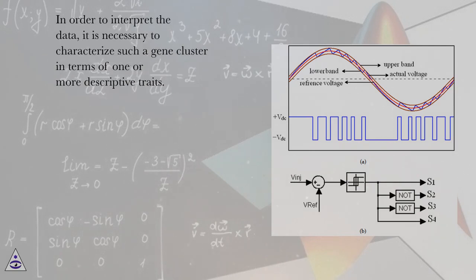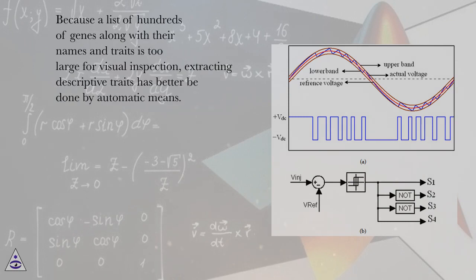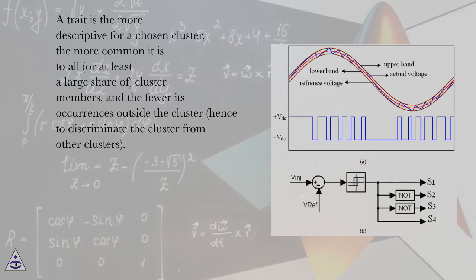In order to interpret the data, it is necessary to characterize such a gene cluster in terms of one or more descriptive traits. Because a list of hundreds of genes along with their names and traits is too large for visual inspection, extracting descriptive traits has better be done by automatic means. A trait is the more descriptive for a chosen cluster the more common it is to all or at least a large share of cluster members, and the fewer its occurrences outside the cluster—hence, to discriminate the cluster from other clusters.